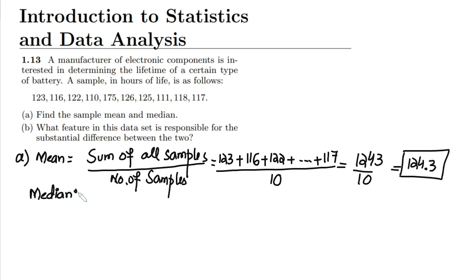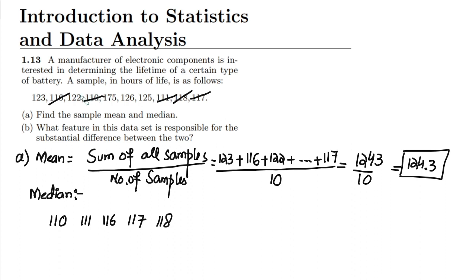Similarly, we have to find the median. In order to find the median, the first step is to sort the data. The smallest number is 110, the second is 111, the third is 116, then 117, then 118, then 122, then 123, then 125, then 126, and the last one is 175.